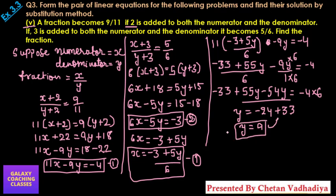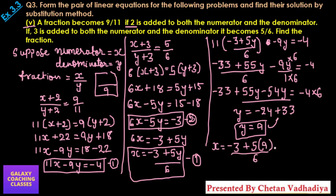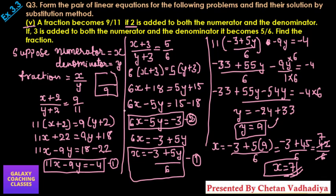So your denominator is 9. Now find the numerator by substituting y = 9 back into result number 1: x = (minus 3 + 5 times 9) by 6 = (minus 3 + 45) by 6 = 42 by 6 = 7. So the numerator is 7 and the denominator is 9, and your fraction is 7 by 9. Thank you so much for watching my video. If you like it, please subscribe to my channel. Thank you so much.